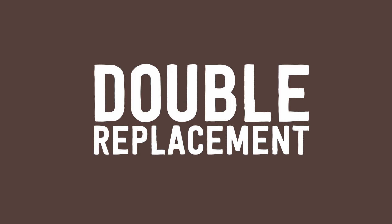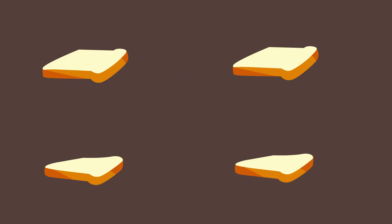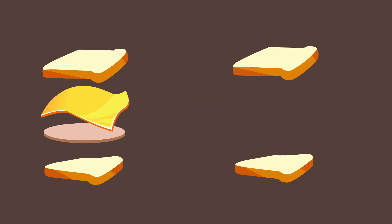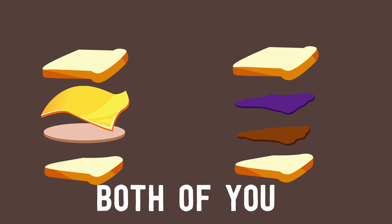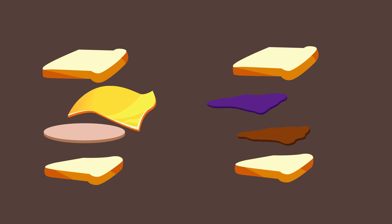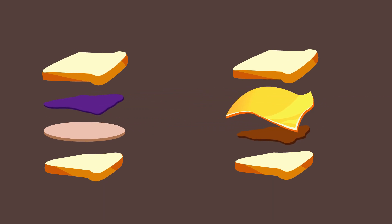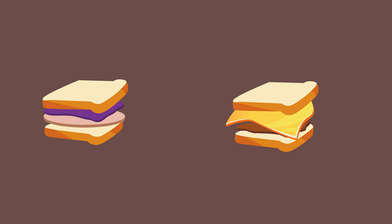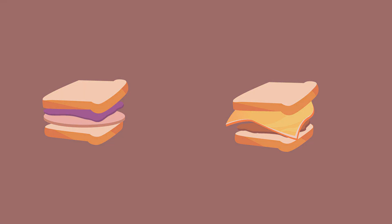The last type of reaction we're covering is double replacement, and it's pretty exciting since this time we're talking about two sandwiches. Let's say that you and your friend both have a sandwich — you have turkey and cheese on yours, and your friend has peanut butter and jelly. Both of you hate yourselves, so you decide to swap an ingredient, and that's it. I guess it's a pretty anticlimactic ending, so let's just finish this off by watching the pretty sparklers again.